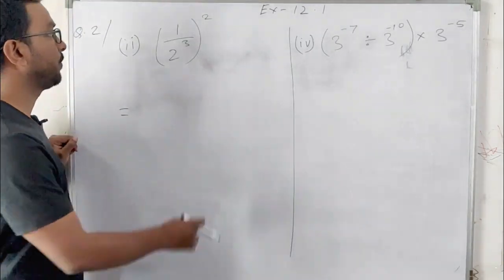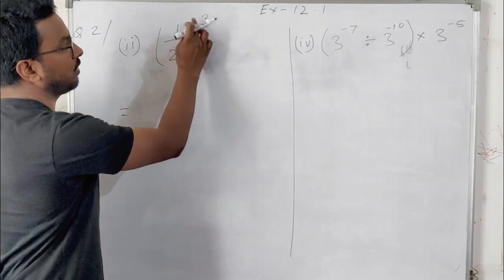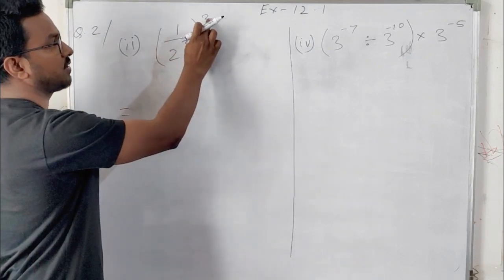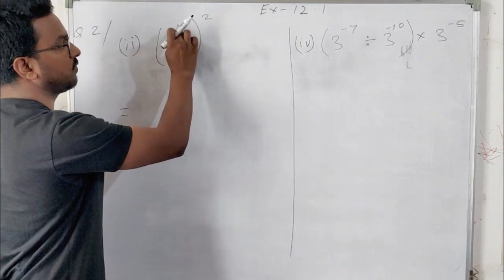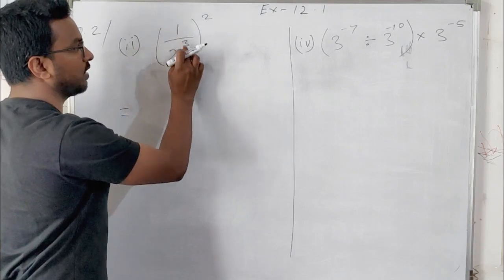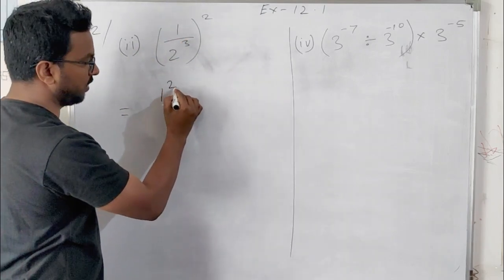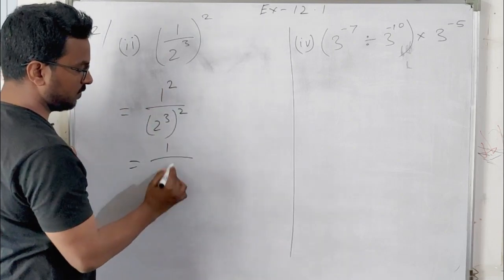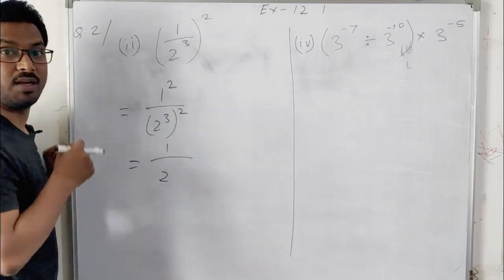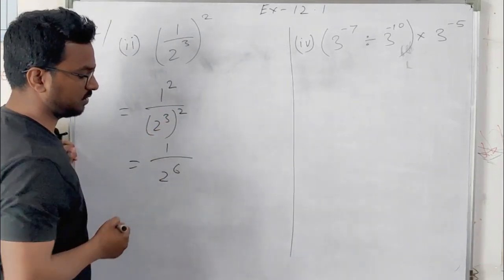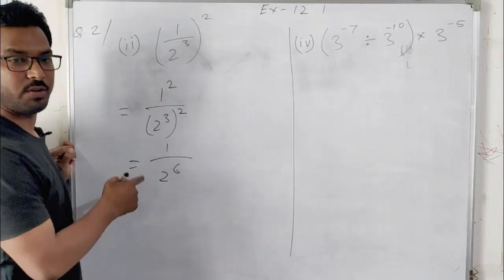The next part is (1/2)^3 whole to the power 2. This outer power applies to both the numerator 1 and the denominator, so we distribute it. This becomes 1 squared over 2 to the power (3×2). 1 squared is 1 and the powers multiply to give 6, so the answer is 1 over 2 to the power 6.